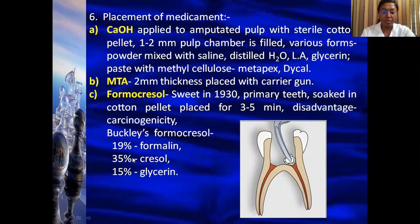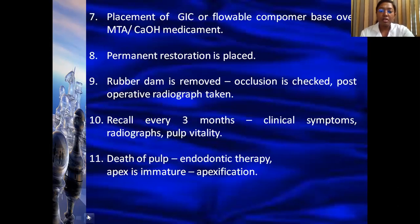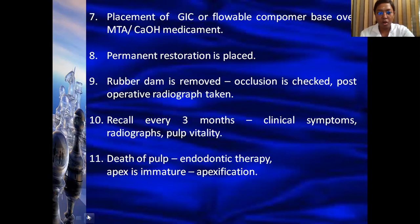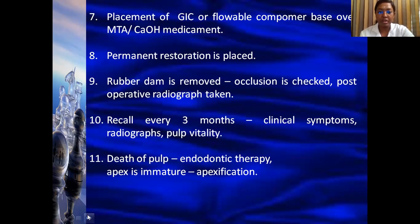Formocresol contains 19% formalin, 35% cresol, and 15% glycerin. The next step after medicament placement is placement of GIC (glass ionomer cement) as a base at the level of the CEJ, or you can also place a zinc oxide eugenol-based temporary cement. Both GIC and zinc oxide eugenol cement are used as a base placed over the medicament that has been placed directly on the amputated pulp.